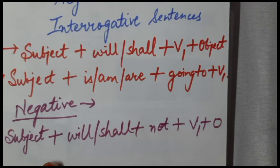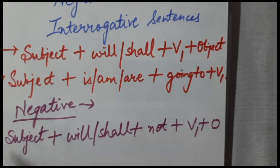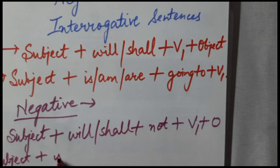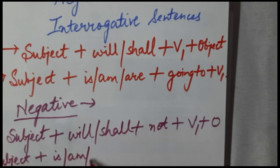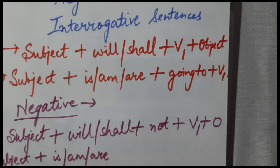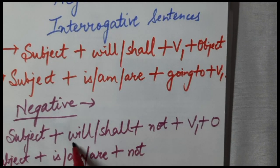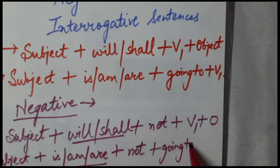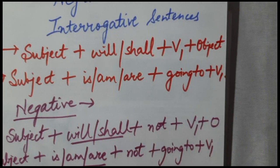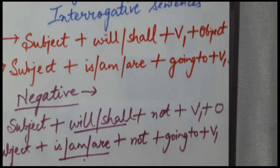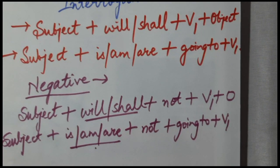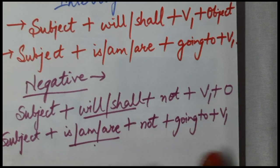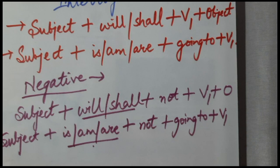For example, 'I will not come today.' And if you are using the going to form, then your subject, then is or am or are according to the subject, then not — because it is always after the helping verb — and then going to and V1. Examples: 'He will not wait for you.' 'He is not going to wait for you.'